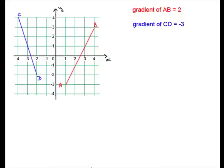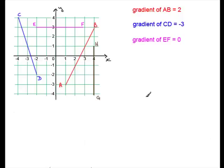Let's have a look at another line. This time, line EF is horizontal. For horizontal lines, there is no gain or loss in the y value for every unit we move across in the x direction. So we talk about the gradient of EF as being zero. The other type of line we can get is a vertical line, and the gradient of a vertical line is classified as being undefined. So the gradient of GH is undefined.